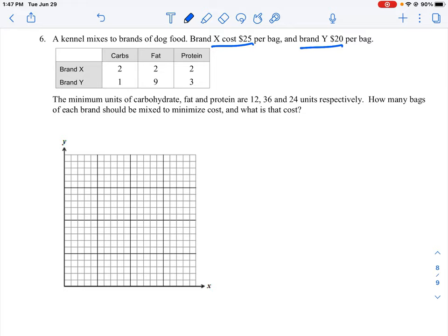Now it says here, these are the minimum units of carbohydrate, fat, and protein are 12, 36, and 24 units respectively. So how many bags of each brand should be mixed in order to minimize the cost, and what is that cost? So what we have here is we are given some target values for carbohydrates, fats, and proteins. So the carbohydrates we need to get are 12, we need 36 for the fats, and we need 24 for the proteins.